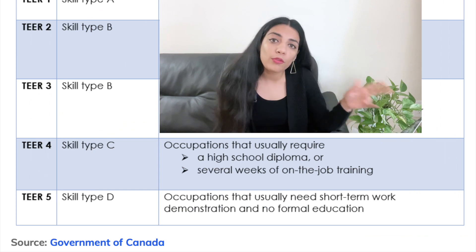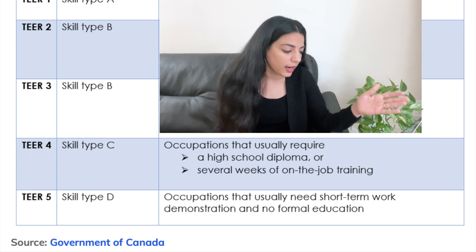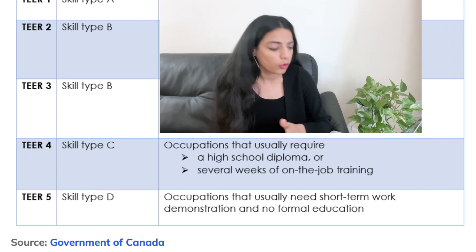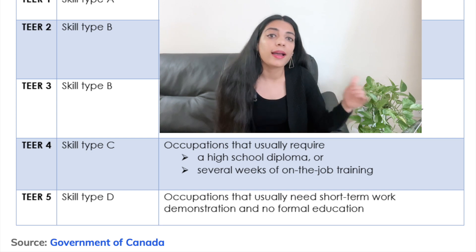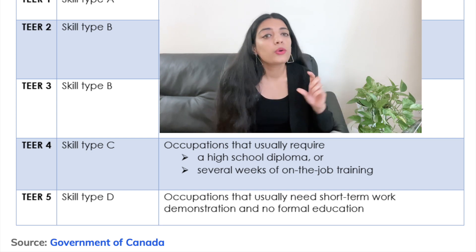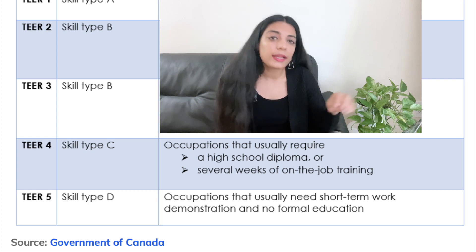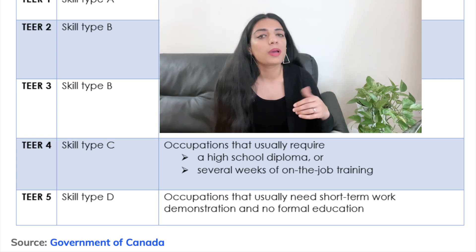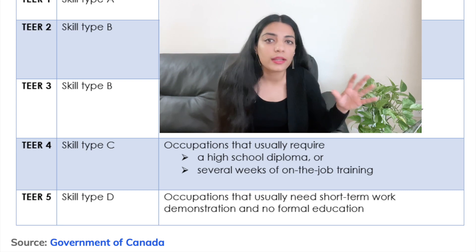Now let's move on to Skill Type C, which is the same as Tier 4. You generally need a high school diploma and a few weeks of training. Skill Type D covers occupations that are more hands-on and do not require any degree.